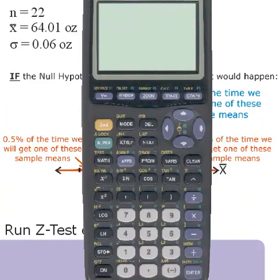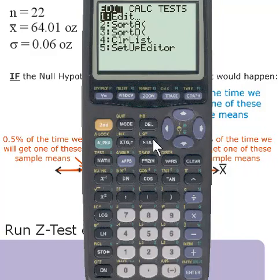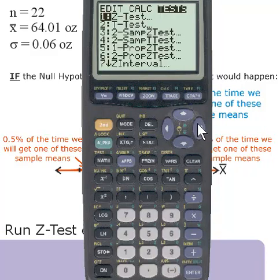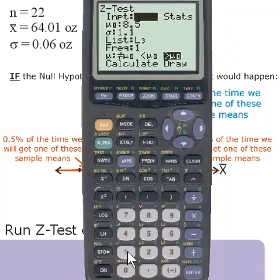We will use the p-value approach in our TI-83/84 calculator. Press the STAT key, then the right arrow key twice to highlight TESTS. Z-test is used since the population standard deviation is known. If the population standard deviation was not known, we would use T-test. Press 1 to select Z-test.